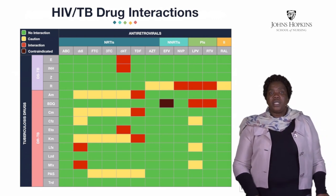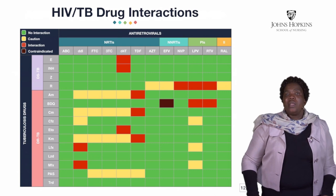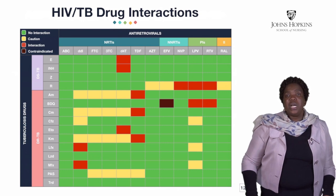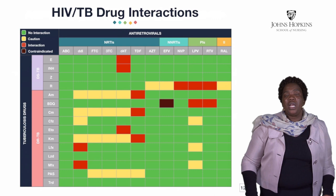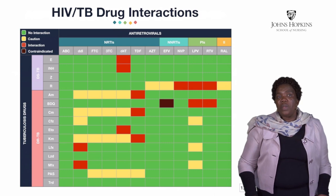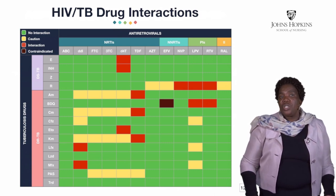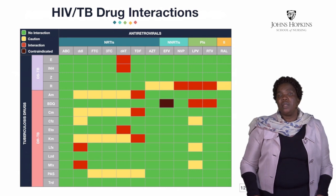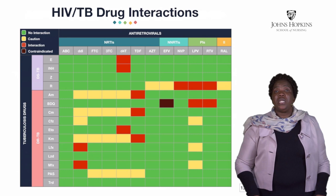This slide shows drug interactions. Look at bedaquiline — bedaquiline and efavirenz is contraindicated, as you can see in the information at the top. Green means no interaction. Yellow means use with caution. Red means there is an interaction. Dark brown means the patient has a significant drug interaction. So you would not start efavirenz and bedaquiline at the same time.